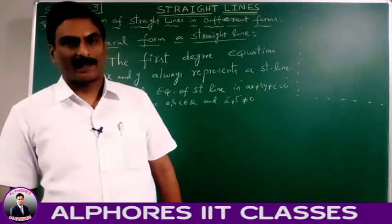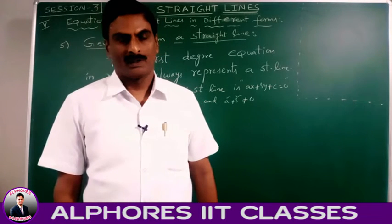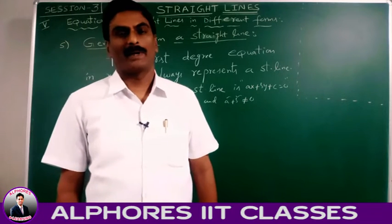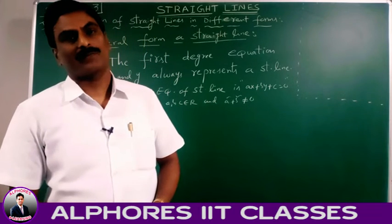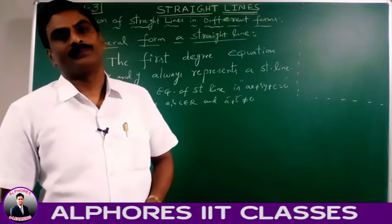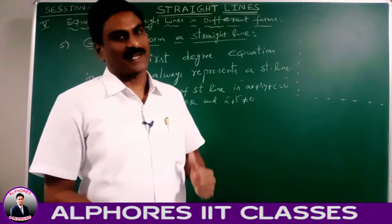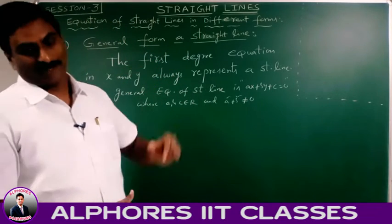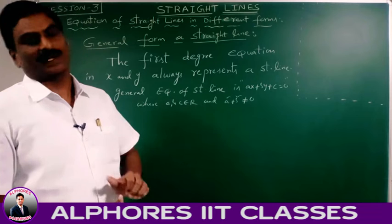Hi students, welcome back to All For Smash Class. Dear students, we have already completed four different forms of equation of straight lines. Now I am coming to the fifth type, that is the general form of a straight line — the equation of the straight line in general form.